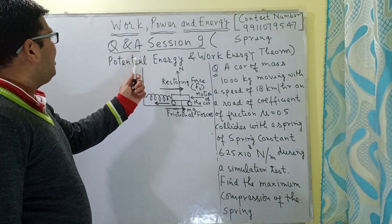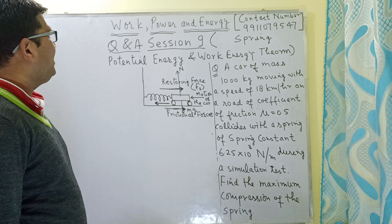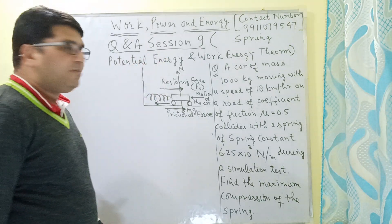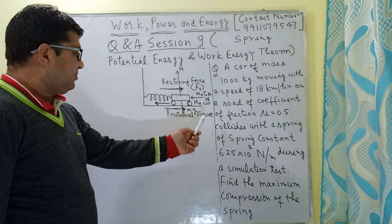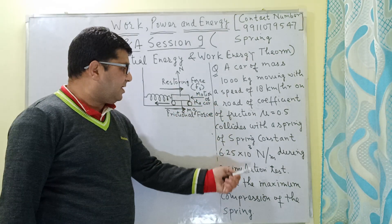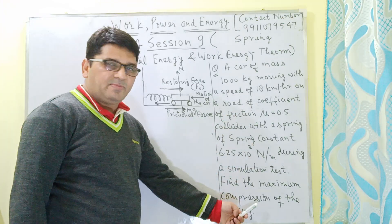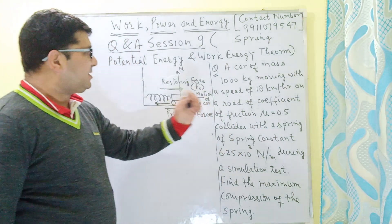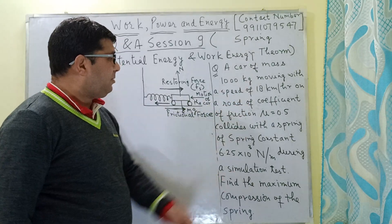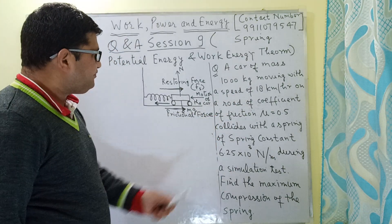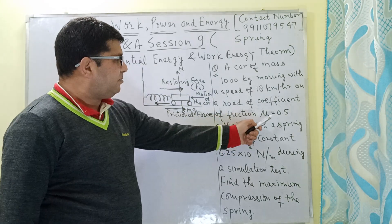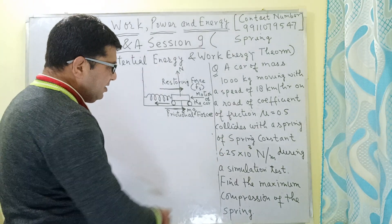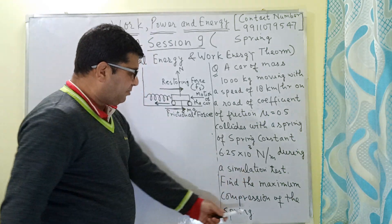Good evening everyone. This is Q&A Session 9 from the chapter on Work, Power and Energy, and the topic is Spring Potential Energy and the Work-Energy Theorem. Today I have taken one question which is available in the NCERT book, but I have slightly modified it by combining two questions into one. The question is: a car of mass 1000 kg moving with a speed of 18 km/h on a road with coefficient of friction 0.5 collides with a spring of spring constant 6.25×10³ N/m during a simulation test. We have to find the maximum compression of the spring.